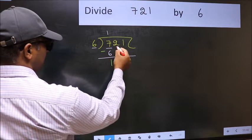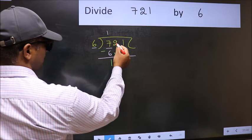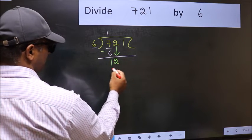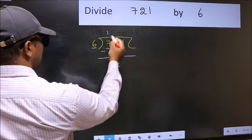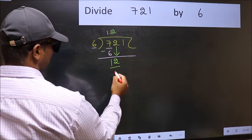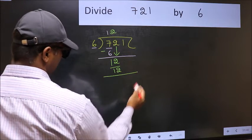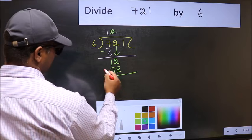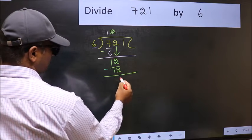After this, bring down the beside number. So, 2 down. Now, 12. When do we get 12 in 6 table? 6 twos, 12. Now, you should subtract. 12 minus 12, 0.